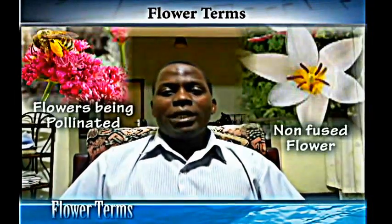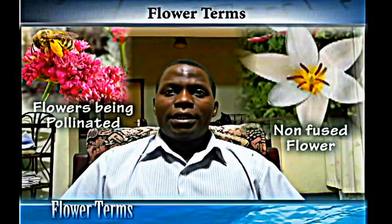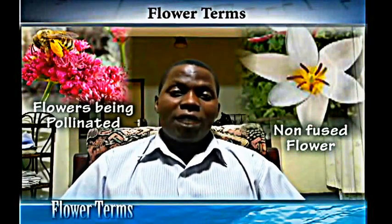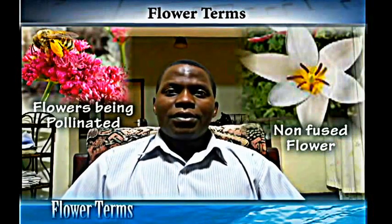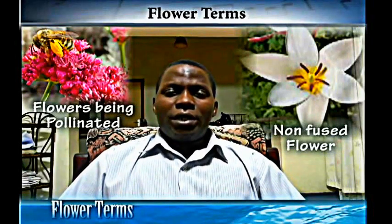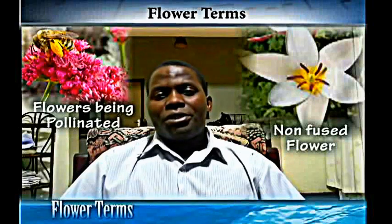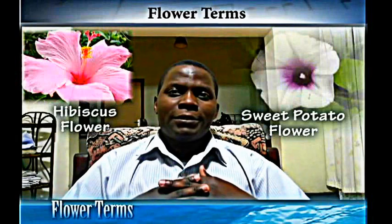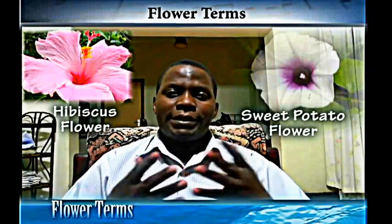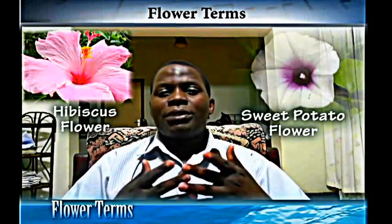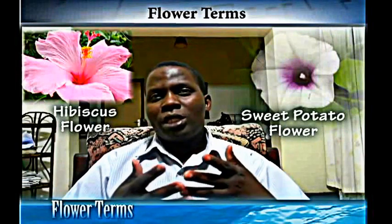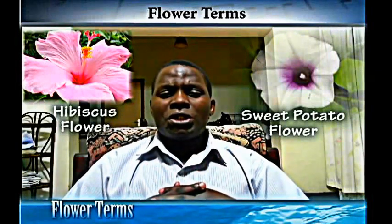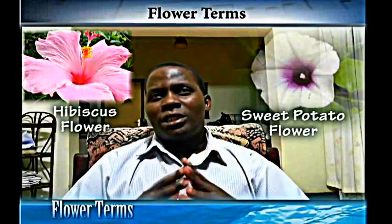We are now going to look at the terms used in describing a flower. A flower can be described in many forms — we can describe it by the components it has, we can describe it according to the placement, and we can describe it according to what it has and what it does not have.